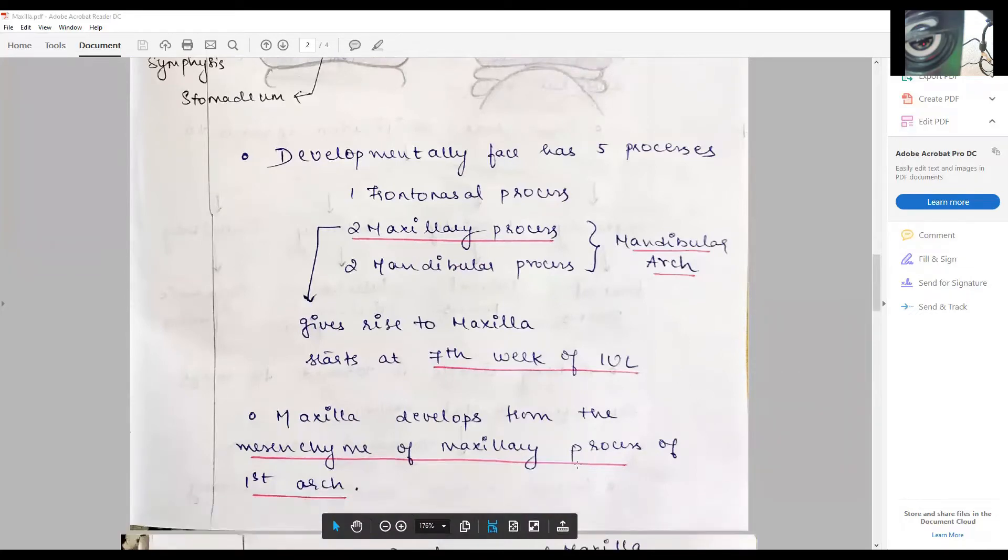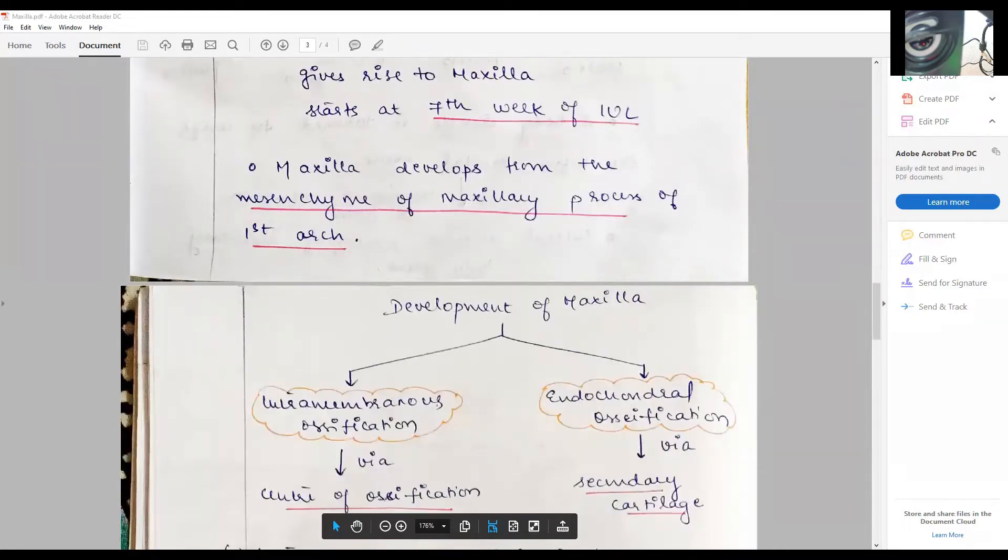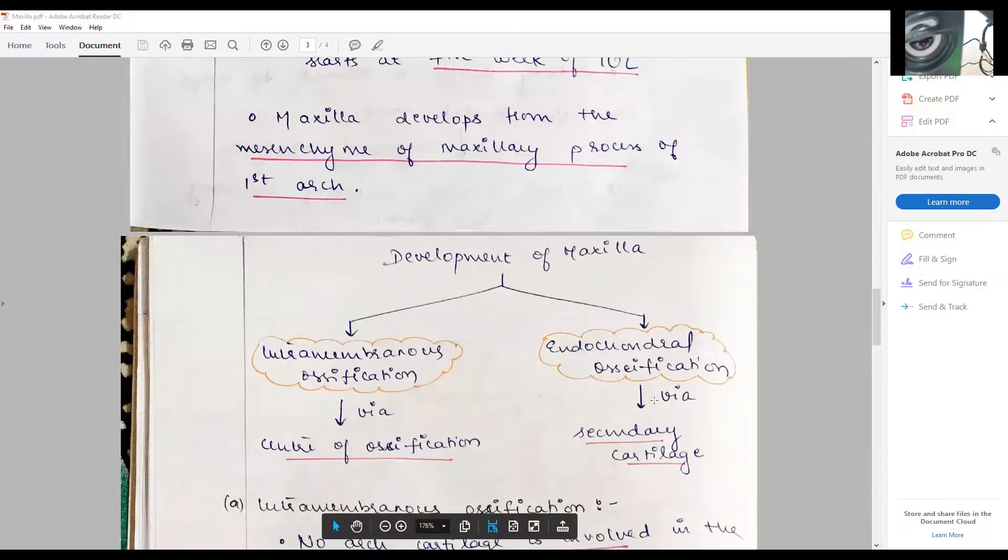Development of maxilla can be broadly divided into intramembranous ossification and endochondral ossification. The intramembranous ossification is via the center of ossification, whereas the endochondral ossification is via the secondary cartilage.